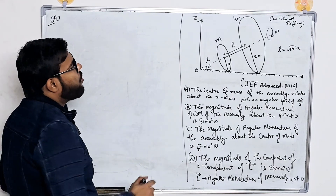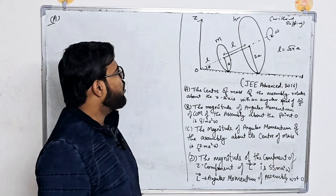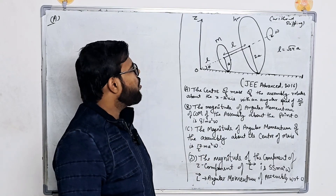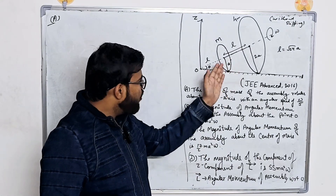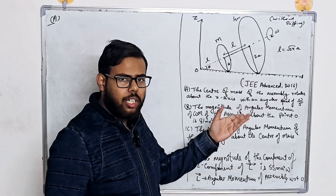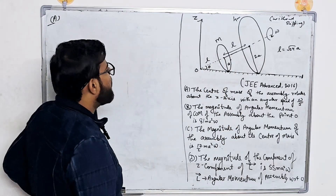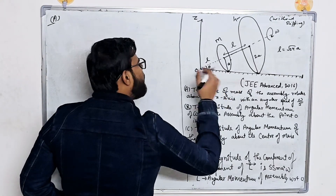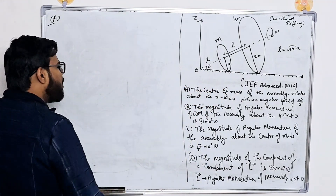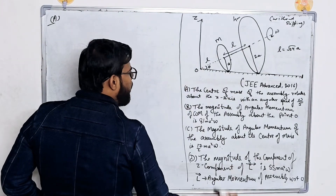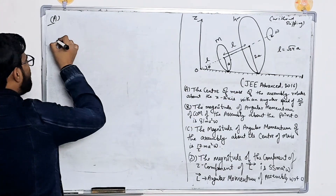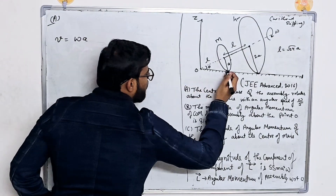Notice that the rotation is happening without slipping and the body is a rigid body. Because of this, the angular speed of the center of mass will be equal to the angular velocity of all points on the body. So if I calculate about any point, the answer will be the same. Let's calculate about this contact point. The velocity at this point is V = omega·A.